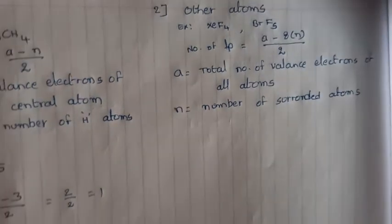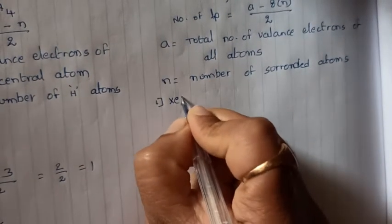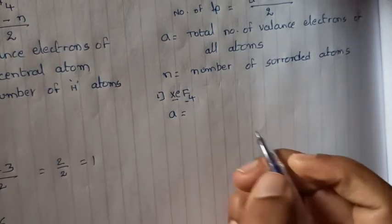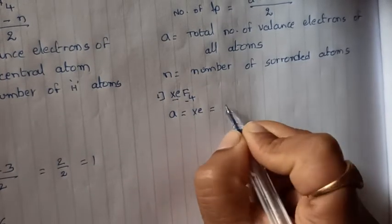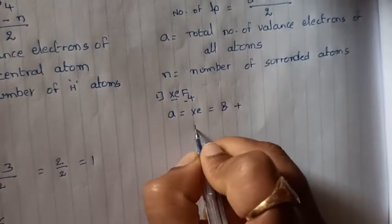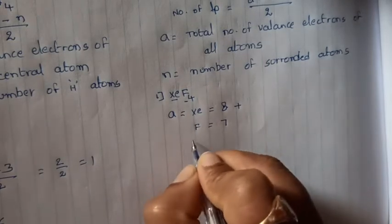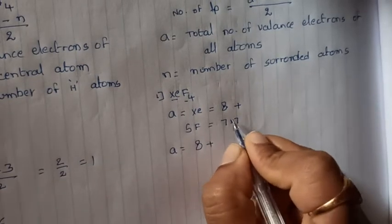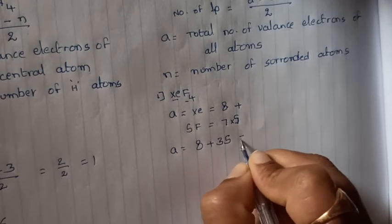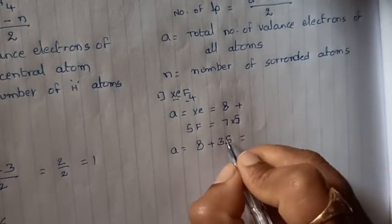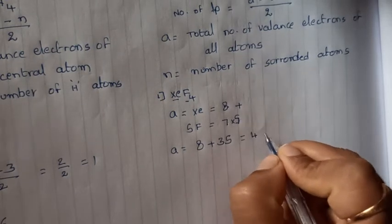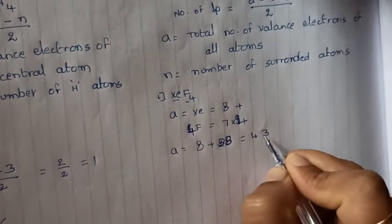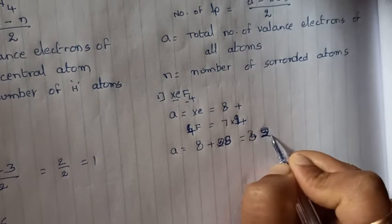Let me calculate for XeF₄. A means the valence electrons of xenon plus the four fluorines. Xenon belongs to the 18th group, so it has 8 valence electrons. Fluorine belongs to the 17th group, so each fluorine contributes 7 electrons. Four fluorines contribute 4 times 7 equals 28 electrons. So A equals 8 plus 28 equals 36.